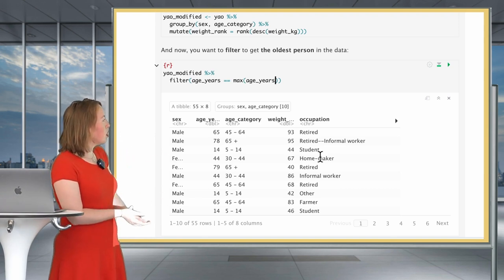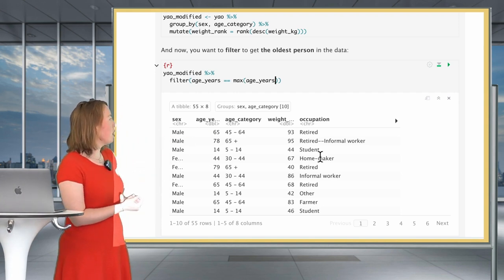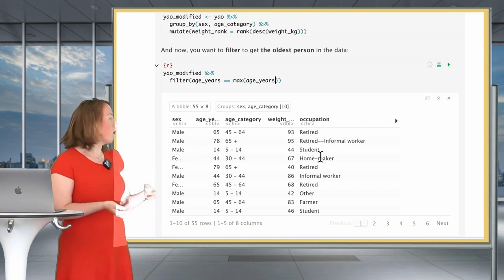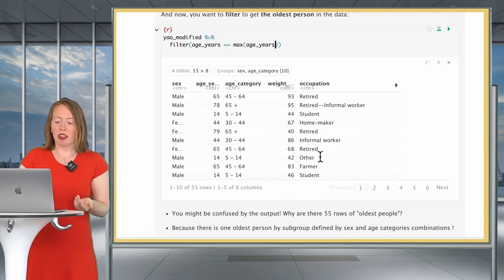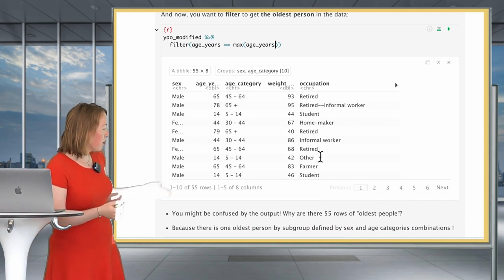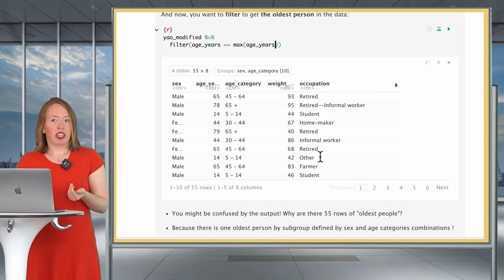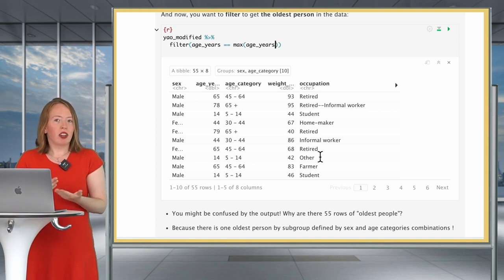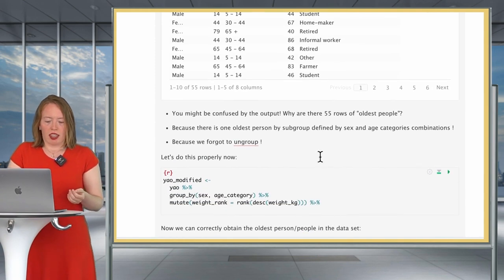We get the oldest person for the males aged 45 to 64. We get the oldest person for the males aged 65 plus, et cetera. So in the end, you'll have a data frame, which you can see here has 55 rows. And this is not at all what you intended. And this is okay if you're checking every single step of your data wrangling. But if this goes unobserved, maybe for a plot or something like that, well, you can really cause you some time to realize what's going on and what's wrong.